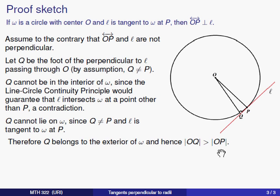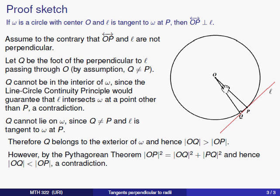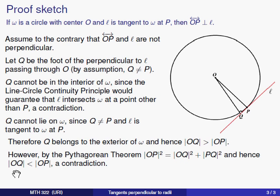On the other hand, if you take a look at the picture, you can convince yourself this is a right triangle, and therefore by the Pythagorean theorem, OQ's length squared plus PQ's length squared should equal OP's length squared. Because the square of a real number is always greater than or equal to zero, that tells us that the length of OQ can't be any bigger than the length of OP — in fact, it has to be smaller. But then these two statements — that the length of OQ is bigger than OP, and that the length of OQ is less than OP — are a contradiction.